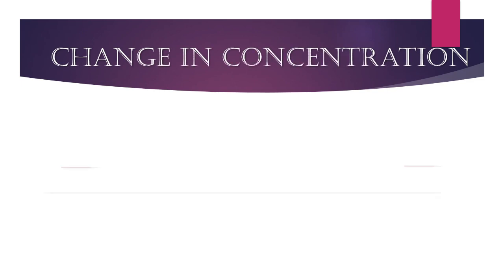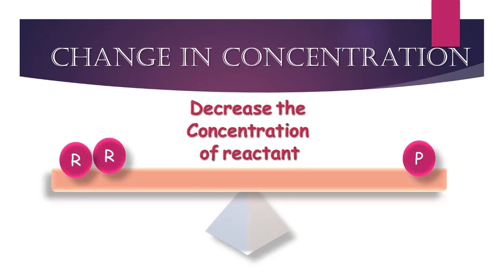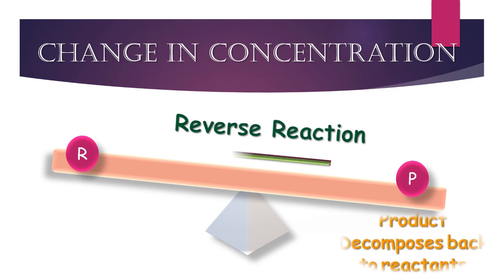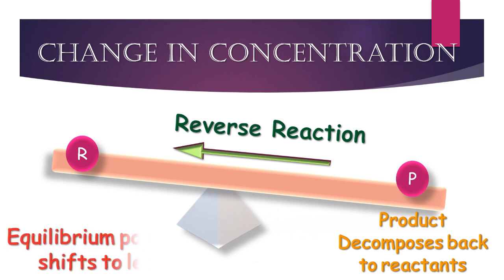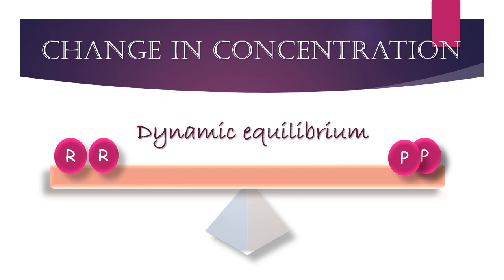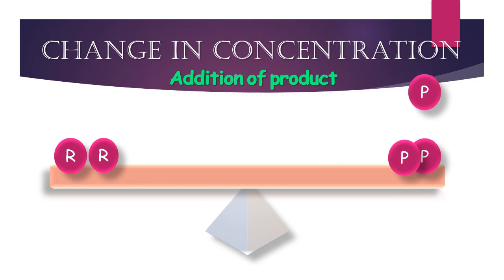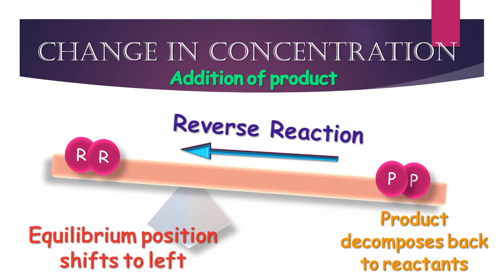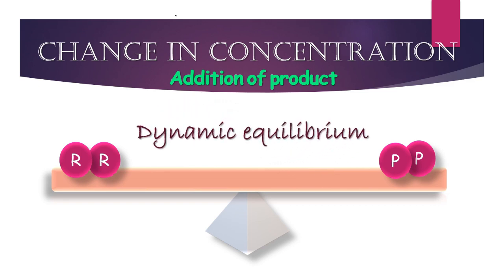On the contrary, the removal of reactant molecules from the reaction mixture also disturbs the equilibrium but in a different way. The reversible reaction is favored in which the products decompose back to the reactants and the equilibrium position shifts to the left. Similarly, the addition of product in the reaction mixture disturbs the equilibrium and favors the reverse reaction. Thus, addition of the product favors the reverse reaction while removal of the product favors the forward reaction.